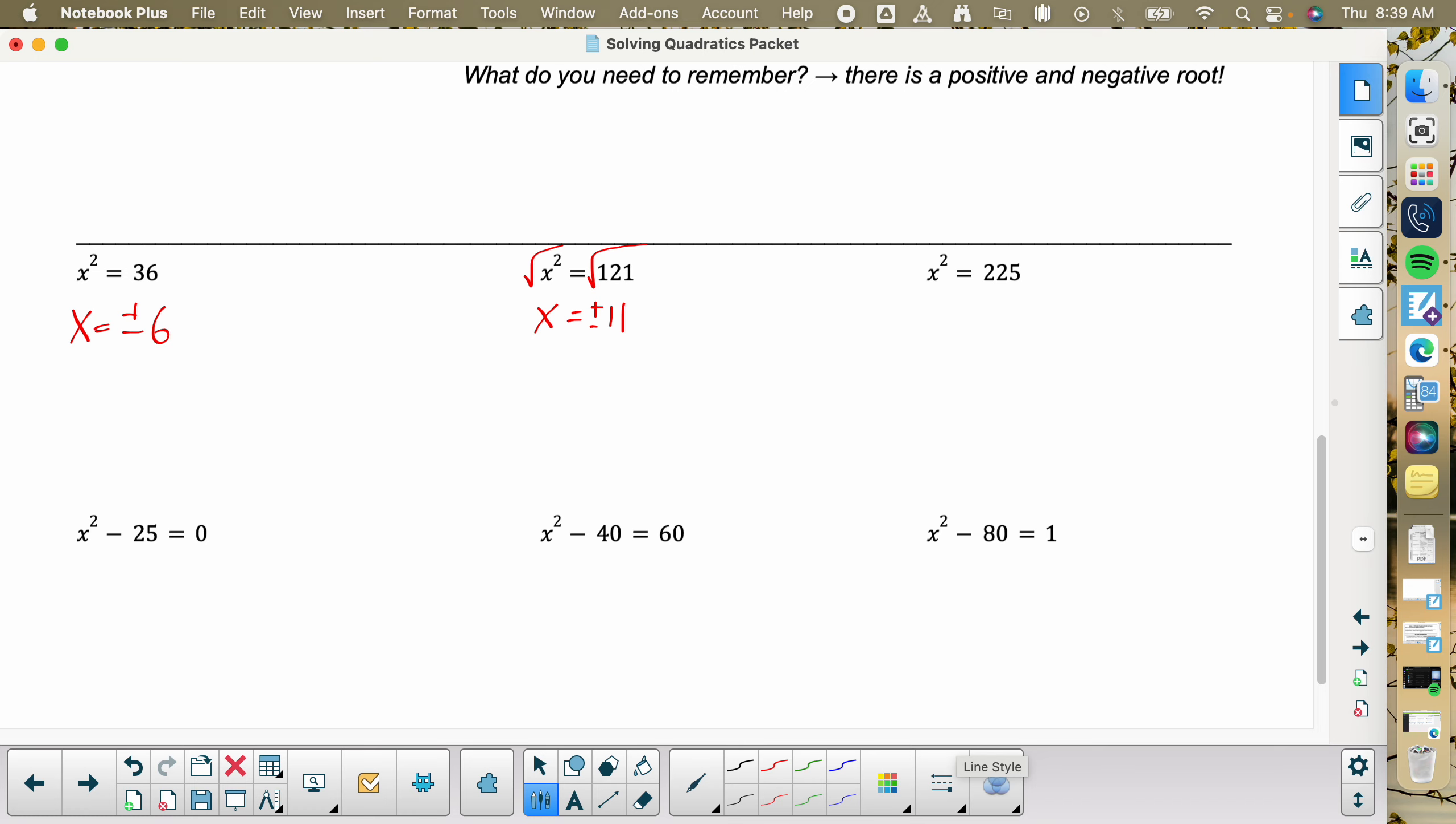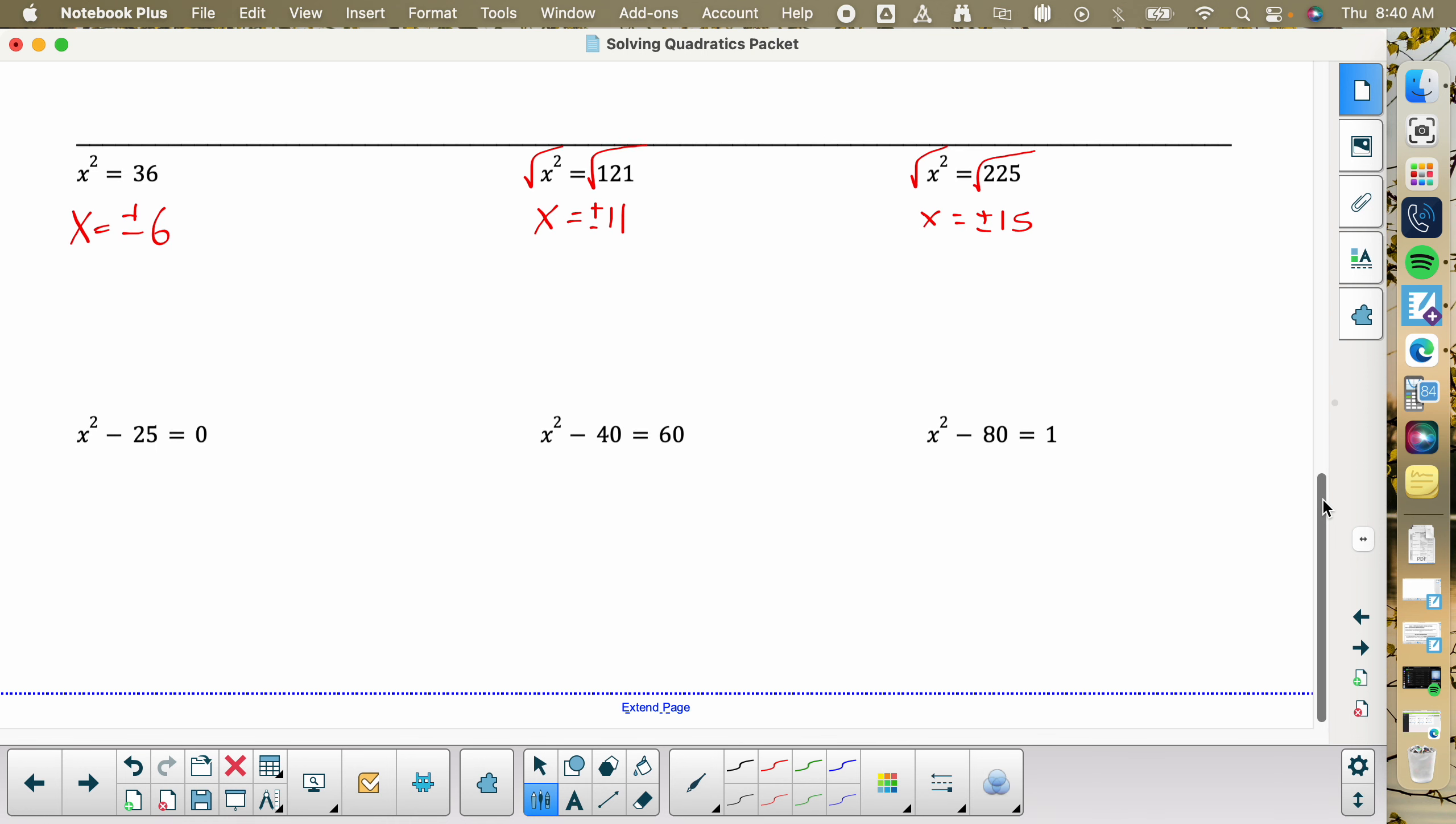But, since we are trying to get 121 by squaring something, a negative number also works. So, I want to make sure that you guys understand that the calculator is never going to tell you plus or minus. You can use your calculator to get answers, but it's not going to give you all of it. Harper? What would we do on this next one? The one that says X squared equals 225. How come? You're right. You're absolutely right. It has the squared. So, we want to cancel off that little squared symbol. So, we're going to do the square root on both sides.